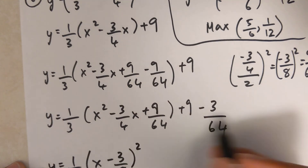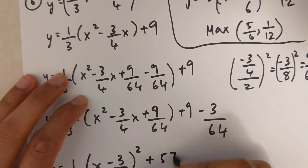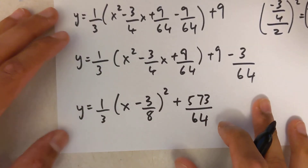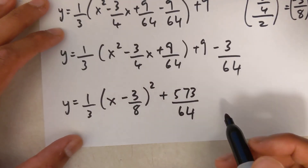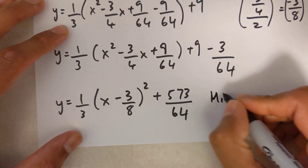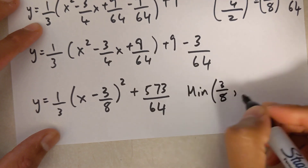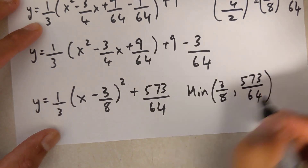Combining the outside terms in the calculator: 9 minus 3 over 64 gives 573 over 64. So the vertex form is 1 over 3 times x minus 3 over 8 squared plus 573 over 64. Since the a value is positive it's a minimum, with x equals 3 over 8 and y equals 573 over 64.